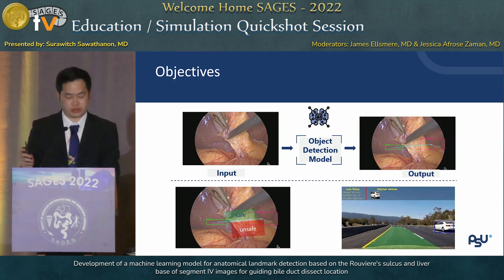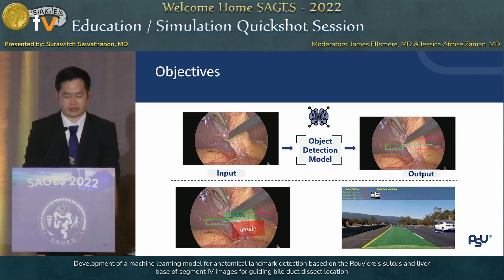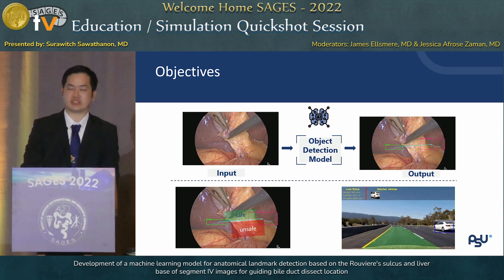To overcome this misperception, the aim of our research is to develop a machine learning model for anatomical landmark detection based on Rouvière's sulcus and liver segment 4, and then create a navigation line. The concept is similar to the lane-keeping assist system found in automobiles.